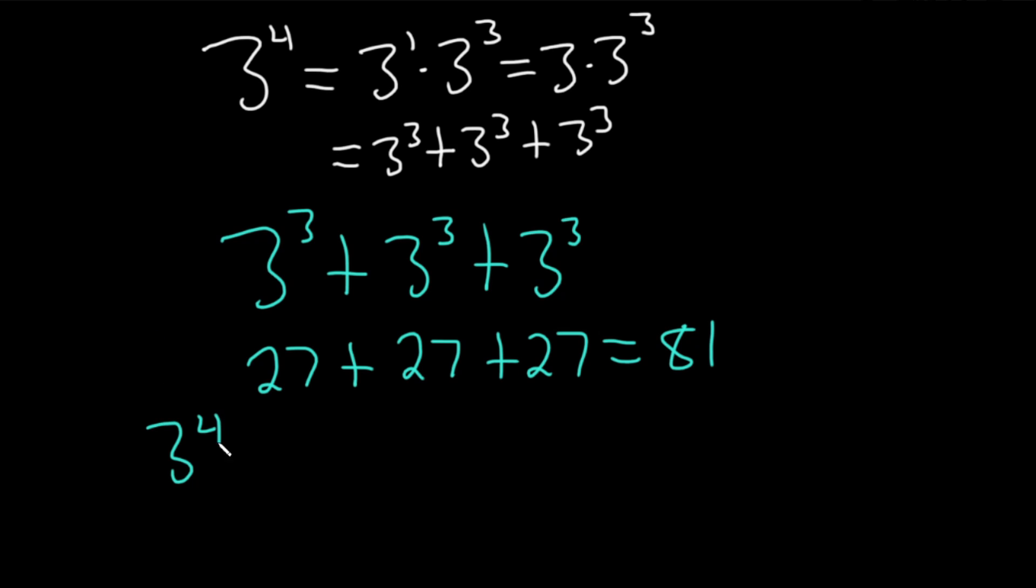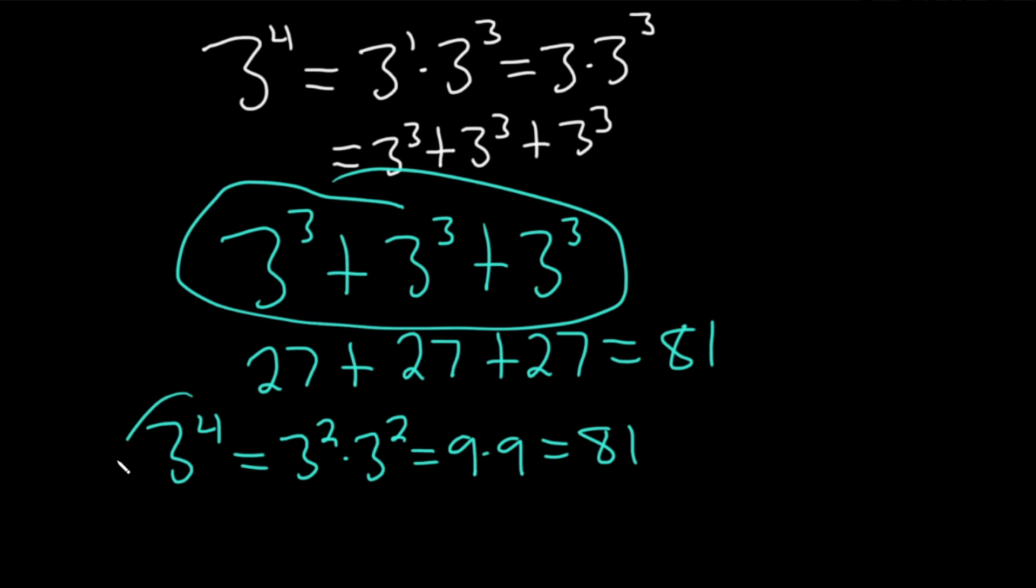And then you say, okay, 3 to the fourth, that's also 81. And if you're not sure if it's 81, you can think of it as 3 squared times 3 squared. Properties of exponents say that you add the exponents here. So that's 9 times 9, which is 81. So therefore, this is equal to this, because they're both equal to 81.